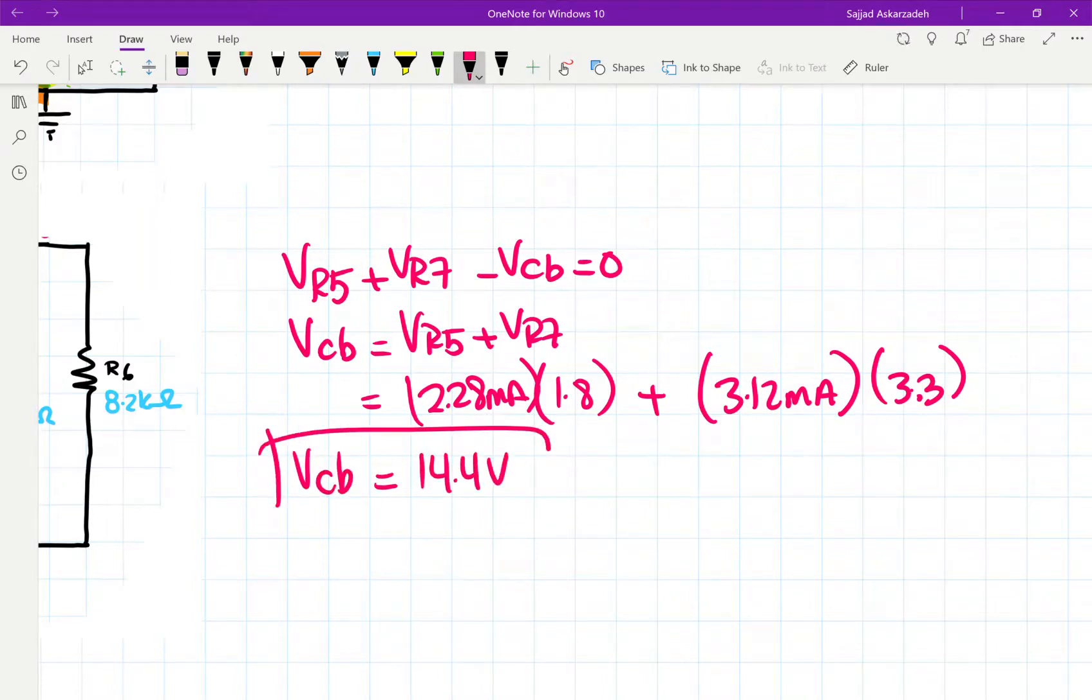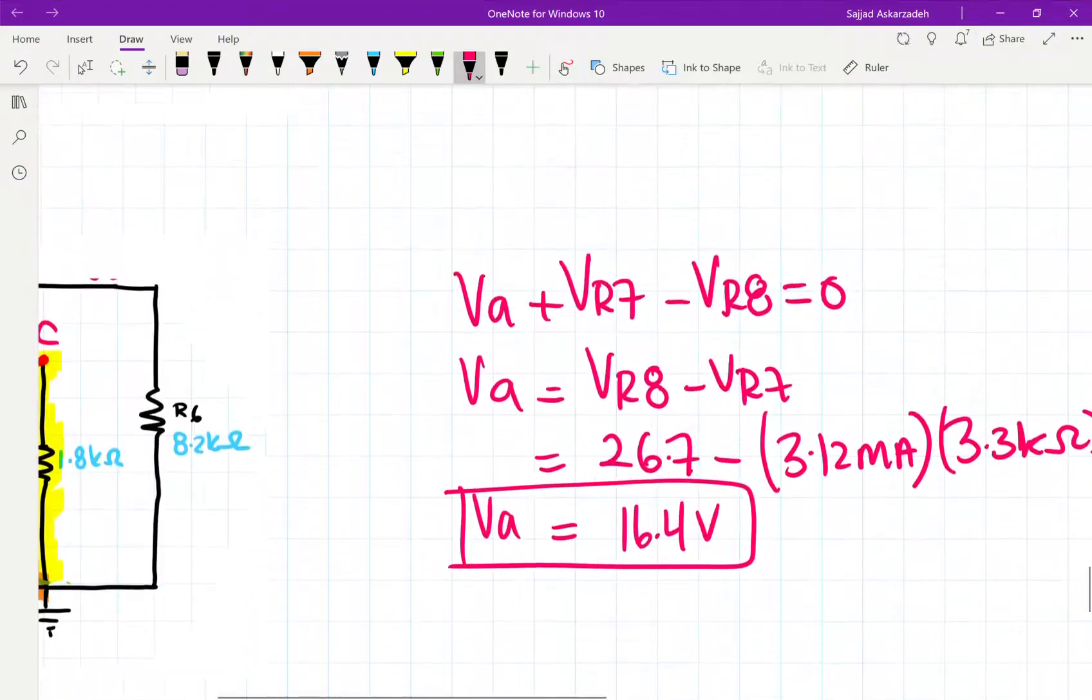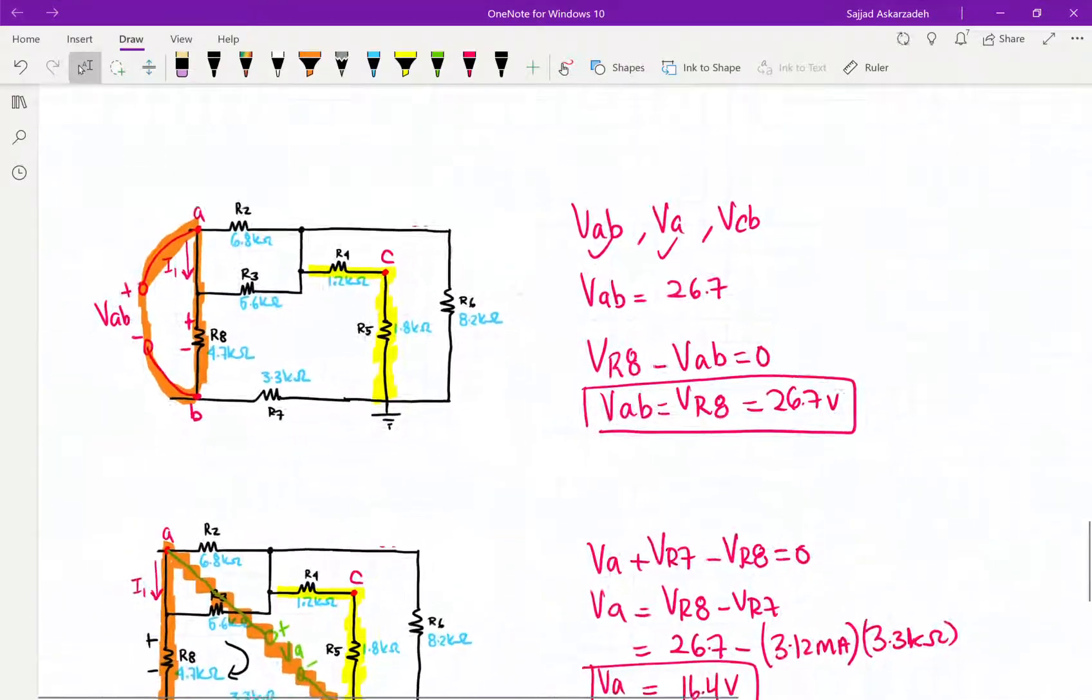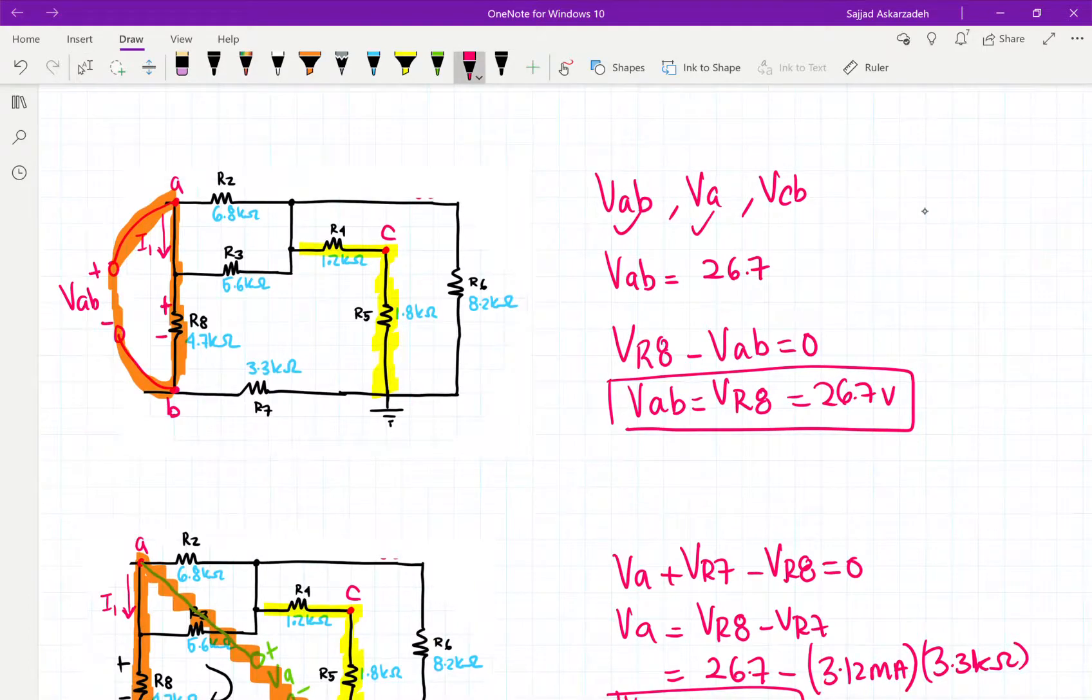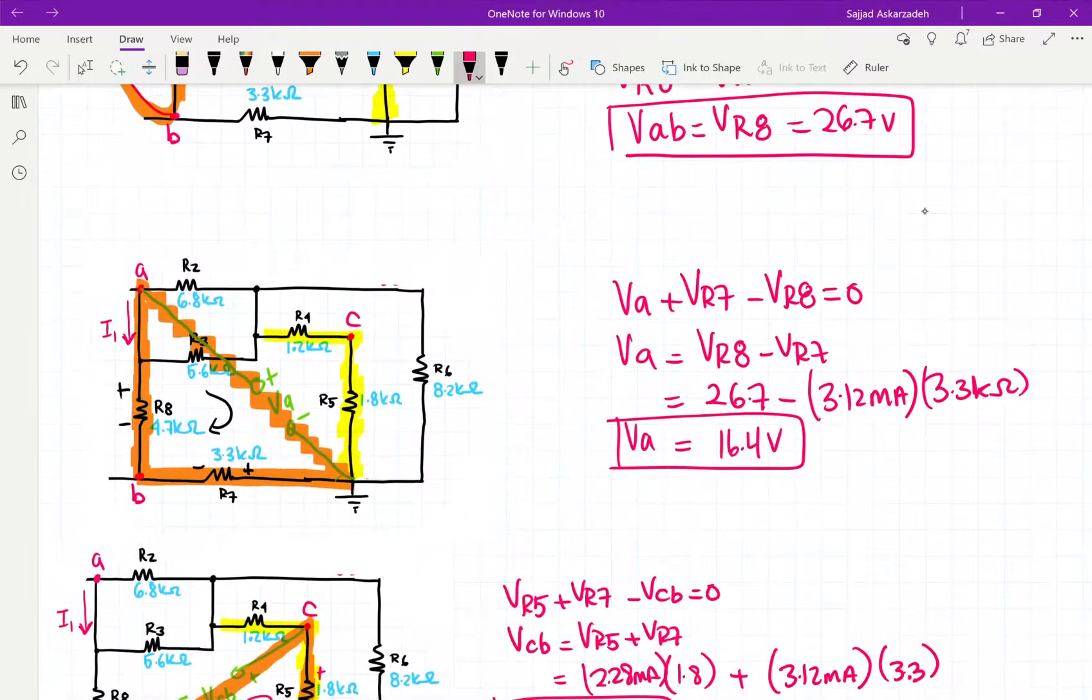So this is our VCB. This is our VA. And this is our VAB. So for VAB, it's voltage of A with respect to B.